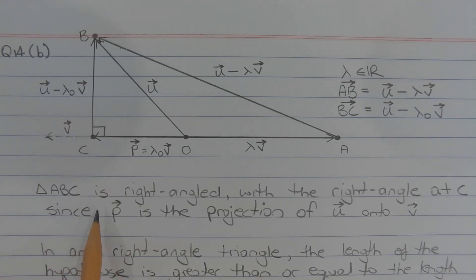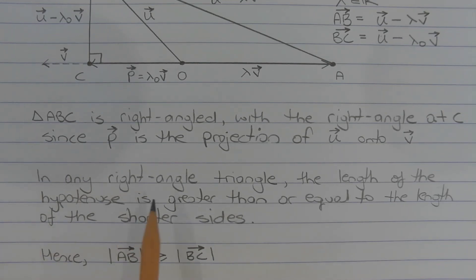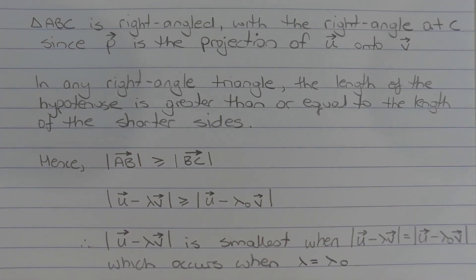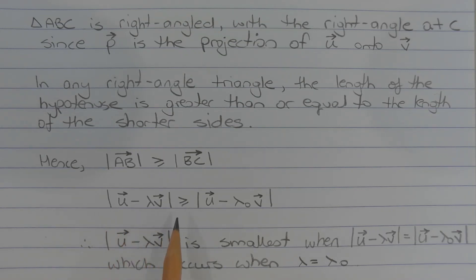Triangle ABC is right-angled with the right angle at C, since p is the projection of u onto v. In any right-angled triangle, the length of the hypotenuse is greater than or equal to the length of the shorter sides. Hence, the length of vector AB must be greater than or equal to the length of vector BC. Vector AB is u minus lambda v, and vector BC is u minus lambda_0 v. So the inequality becomes: the length of u minus lambda v must be greater than or equal to the length of u minus lambda_0 v.